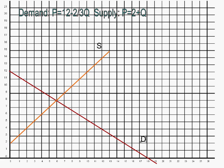Welcome to part G of our lectures on consumer surplus, producer surplus, and deadweight loss. We've already graphed and calculated what's going on in equilibrium, looked at a price ceiling of four, and a production quota of two units. In those cases we saw that the outcome in terms of quantity, variable cost, and deadweight loss were the same. But now we're going to look at an excise tax and see what happens.